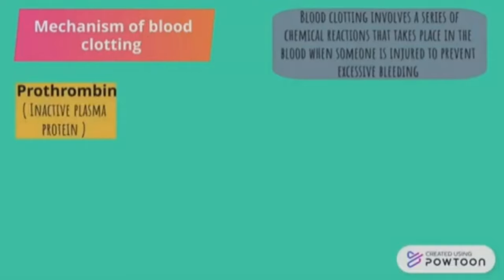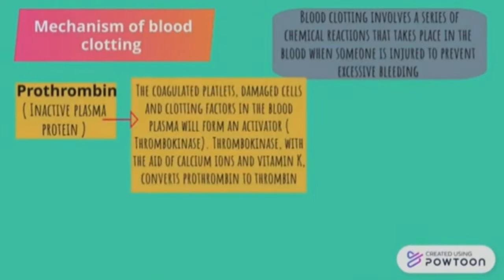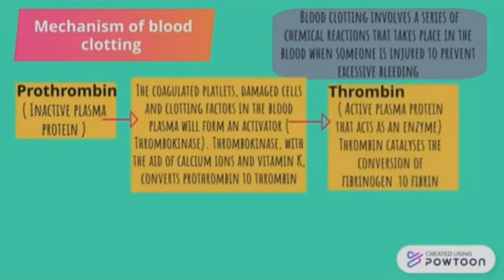The process starts with prothrombin, an inactive plasma protein. Coagulated platelets, damaged cells, and clotting factors in the blood plasma form an activator called thrombokines. Thrombokines, with the aid of calcium ions and vitamin K, convert prothrombin to thrombin — an active plasma protein that acts as an enzyme. Thrombin then catalyzes the conversion of fibrinogen to fibrin.